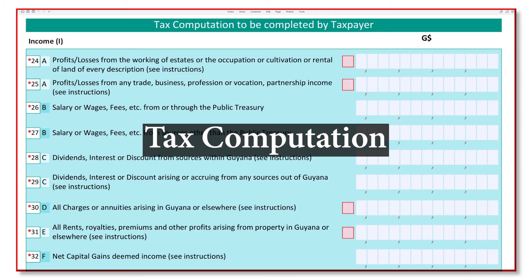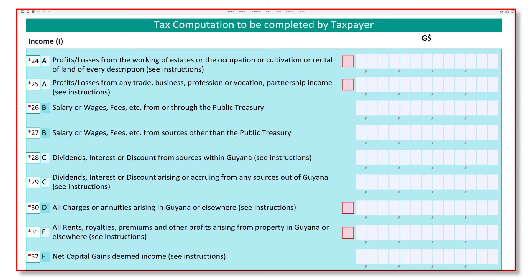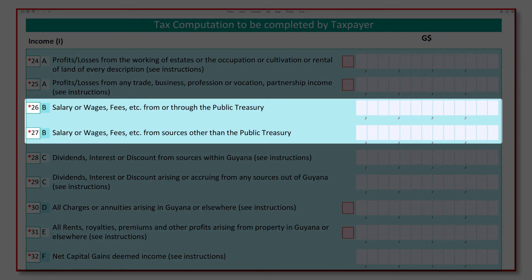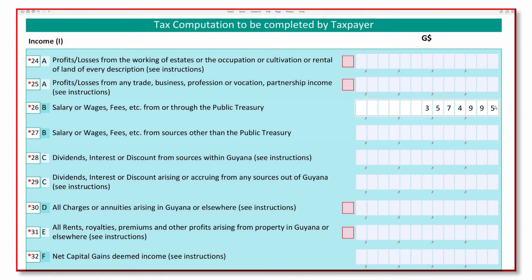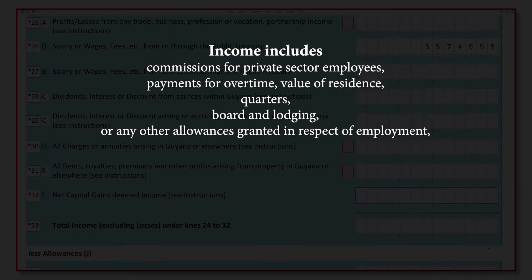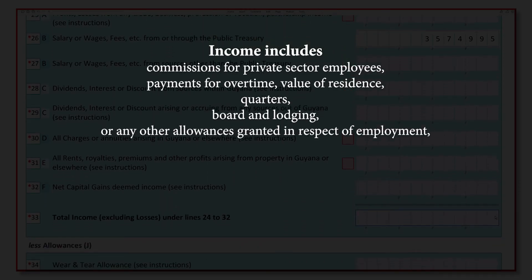Tax computation — this is where things get interesting. This part of the video is specifically for employees whose only source of income is from their public or private sector job. If you are a government employee or any other employee paid from the public treasury, you must enter your income in line 26. If you are not a government employee and work within the private sector, your income must be stated in line 27. John's income is $3,574,995. Income includes commissions for private sector employees, payments for overtime, value of residence, quarters, board and lodging, or any other allowances granted in respect of employment, whether in money or otherwise.